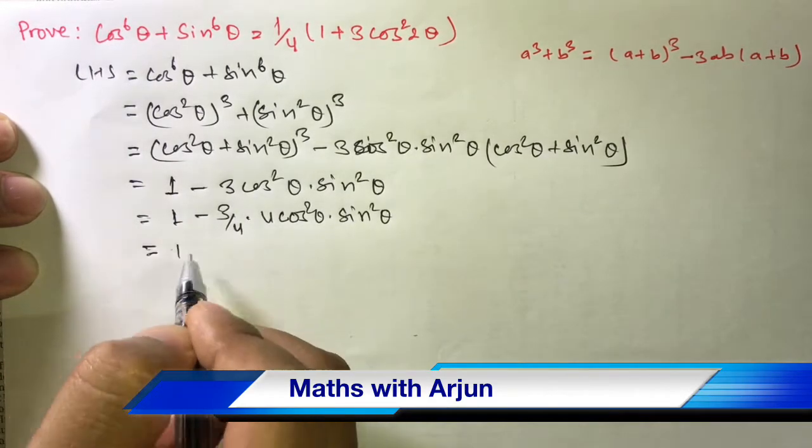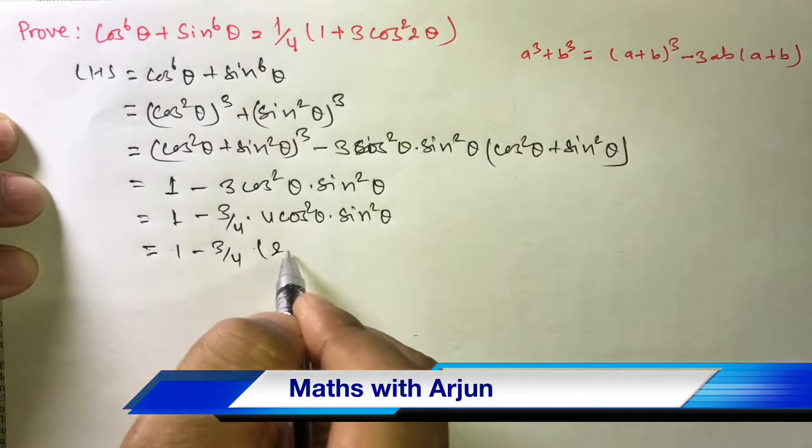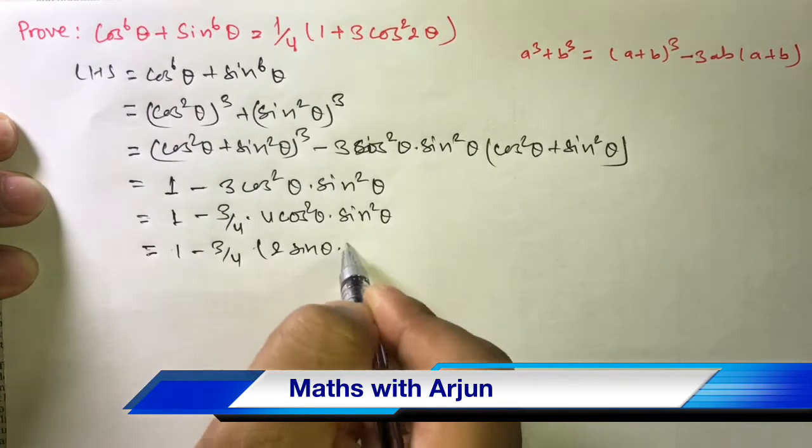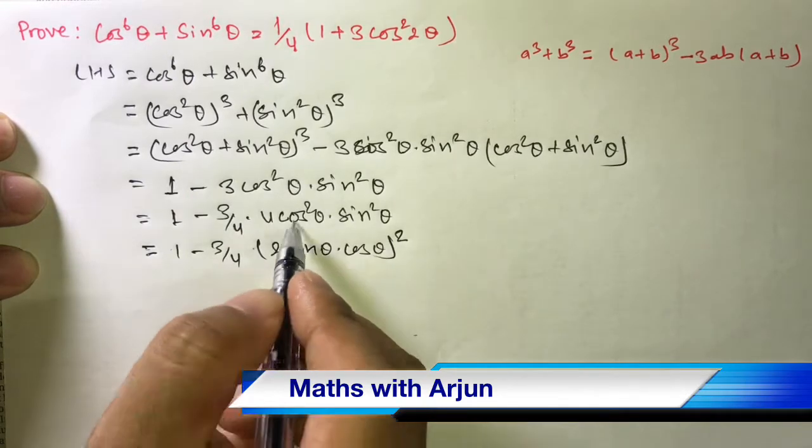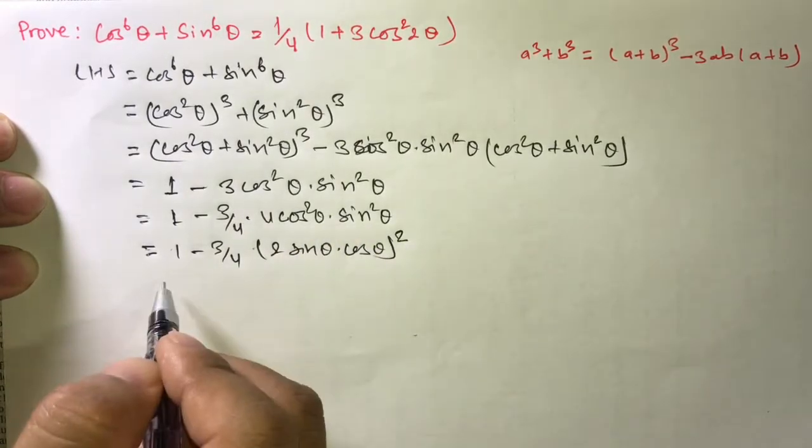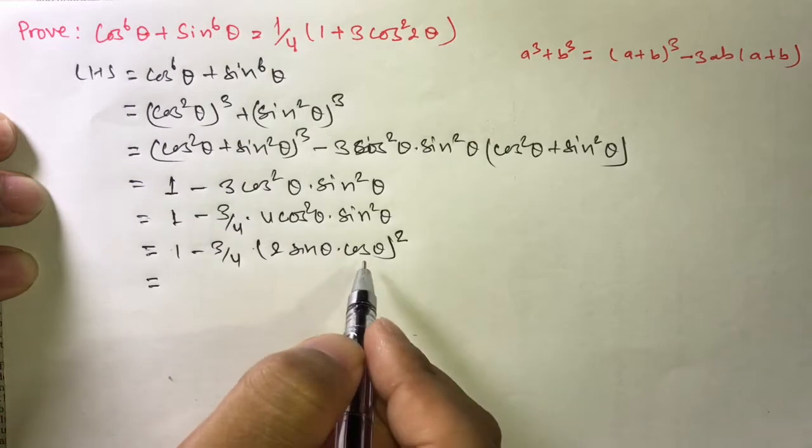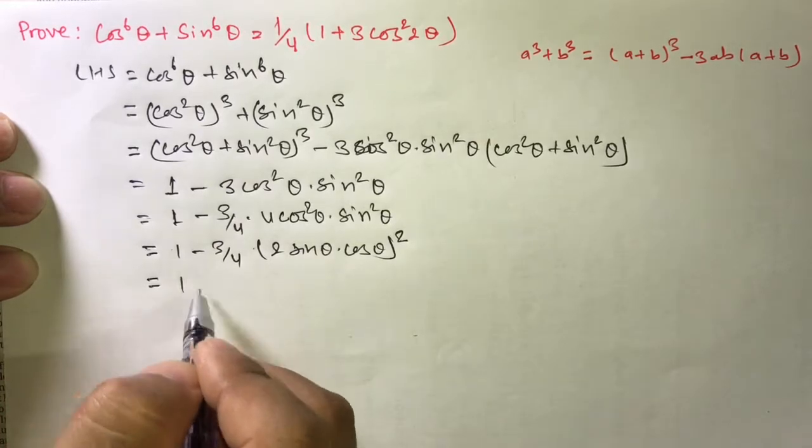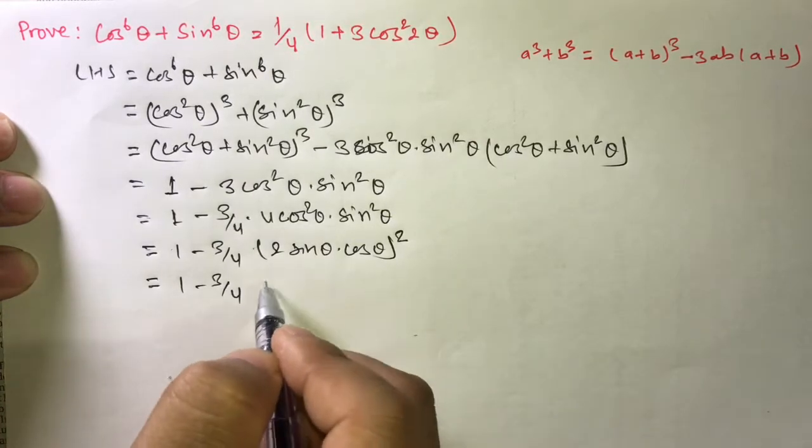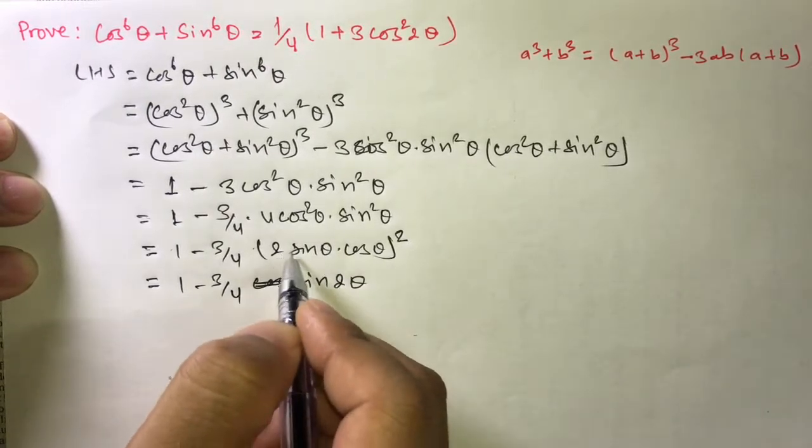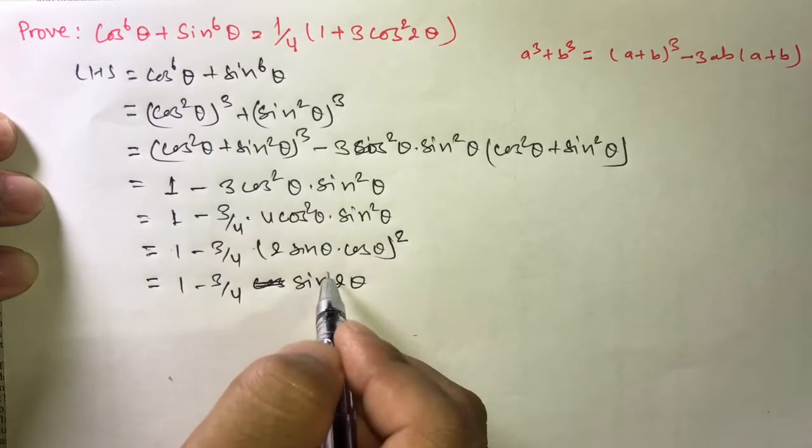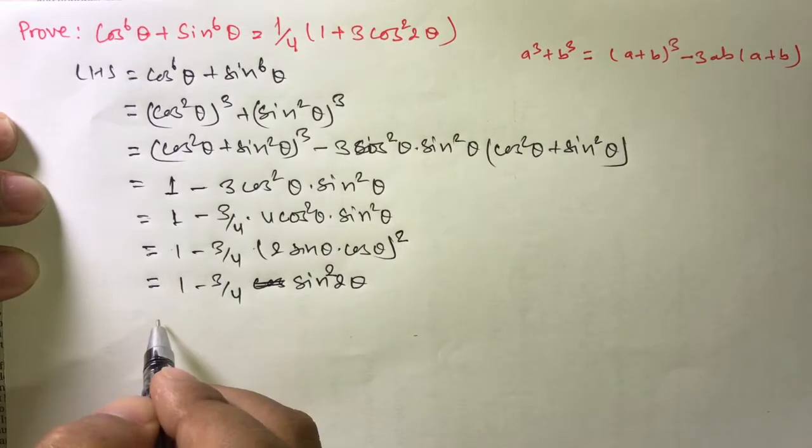Then here will be 1 - ¾(2sinθ·cosθ)². 4 equals 2² times sin·cos whole squared. Then according to law of indices we can write with single power: 1 - ¾·sin²2θ, since 2sinθ·cosθ = sin2θ, and here is whole squared.